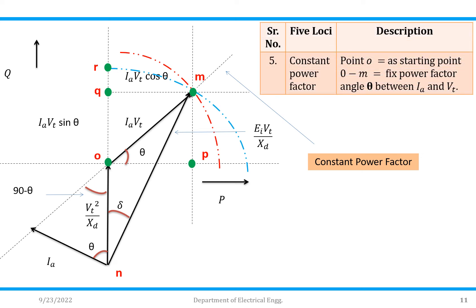The fifth locus is nothing but constant power factor. Again, take O as starting point and OM as the line. This OM is a fixed value with angle theta — a fixed power factor angle theta between IA and VT. Therefore, along this line, it represents a constant power factor, which is shown here. This is the line which shows constant power factor.